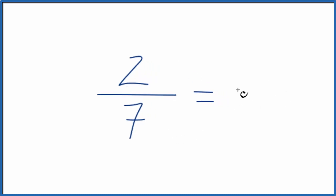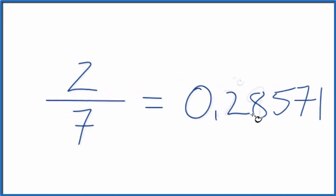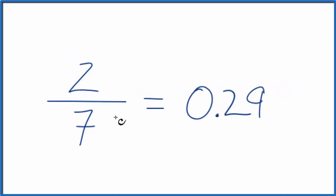We could just type it in our calculator, and that would give us a few more digits. Let's round this to 0.29. So we could say the fraction 2 sevenths as a decimal is 0.29, although this number is rounded some.